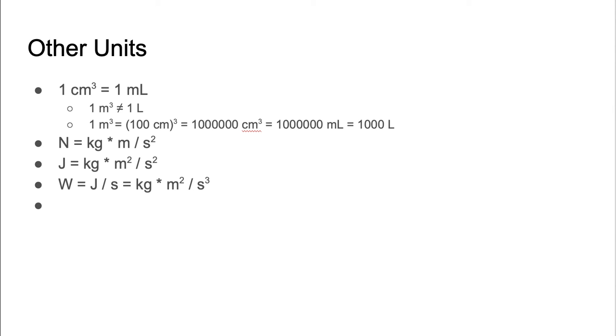So if we do calculation 1 meter cube equal, so 1 meter is 100 centimeters so it's 100 centimeter cube and if we do those calculation we're going to get 1 million centimeter cube which is equal to 1 million milliliter and if we convert that to liter by dividing by 1,000 we're going to get 1,000 liter.